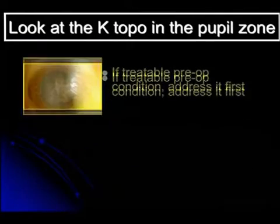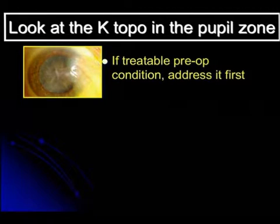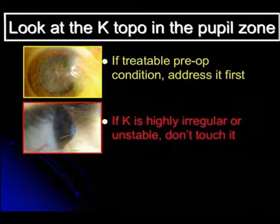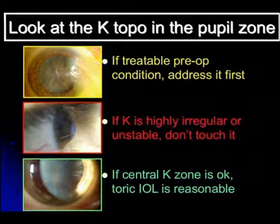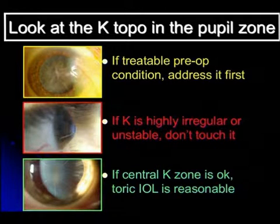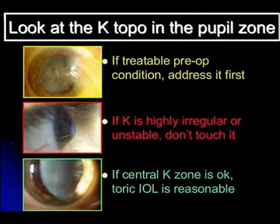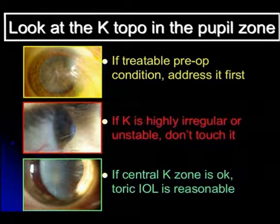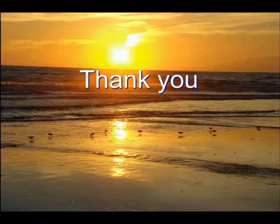The take-home message: look at the topography in the pupil zone. If it's treatable pre-op, fix that first. If it's highly irregular or unstable, don't touch it — because the last person to touch it, it's always their fault. If the central zone looks pretty reasonable, then the toric IOL should be fine. Two ways I like to remember: look at the central K topography, but also look at history. If they've tolerated glasses and saw pretty well with cyl in their glasses, they'll probably tolerate a toric lens. If, however, they required an RGP contact to fix their astigmatism in the past, I'm not putting a toric lens in.